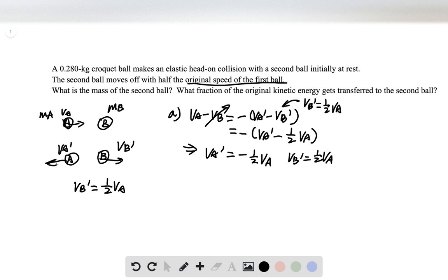Now what we need to find is mB, and we can find that by using the conservation of momentum. In the conservation of momentum we know vA, we know vB, we know vA prime, vB prime, and we know mA, so from that equation we should be able to find mB.